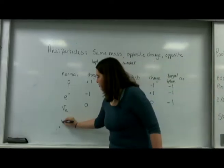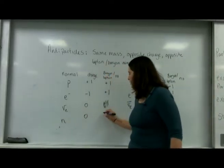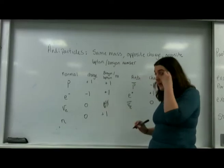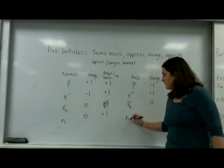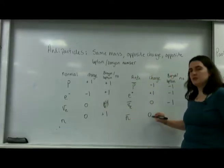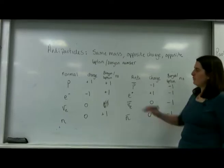We can do neutrons - zero charge, plus one baryon number. The antineutron has still got zero charge and minus one baryon number.